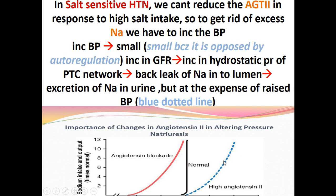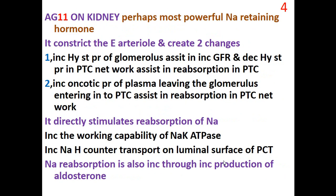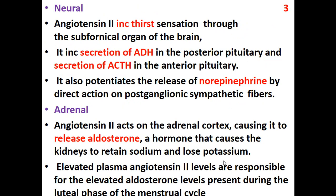In summary, angiotensin 2 has multiple effects: a vasoconstrictive effect; very important effects on the kidneys causing sodium retention — it is perhaps the most powerful sodium-retaining hormone; it constricts the efferent arteriole creating different hemodynamic changes; it directly stimulates the sodium-potassium pump; it stimulates sodium-hydrogen countertransport; it increases aldosterone production; it increases thirst by stimulating the sub-fornical organ of the brain; and it increases the secretion of ADH.